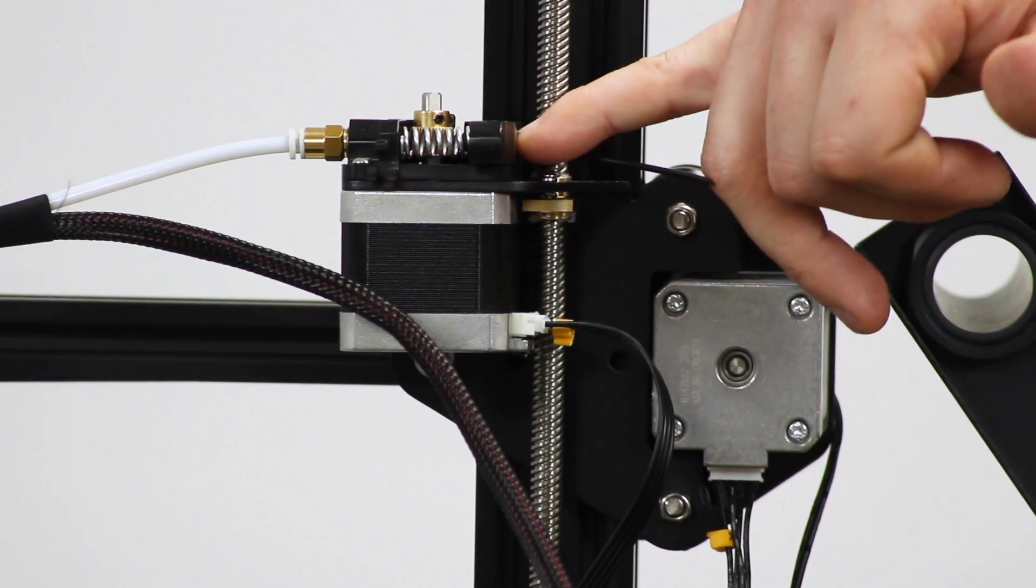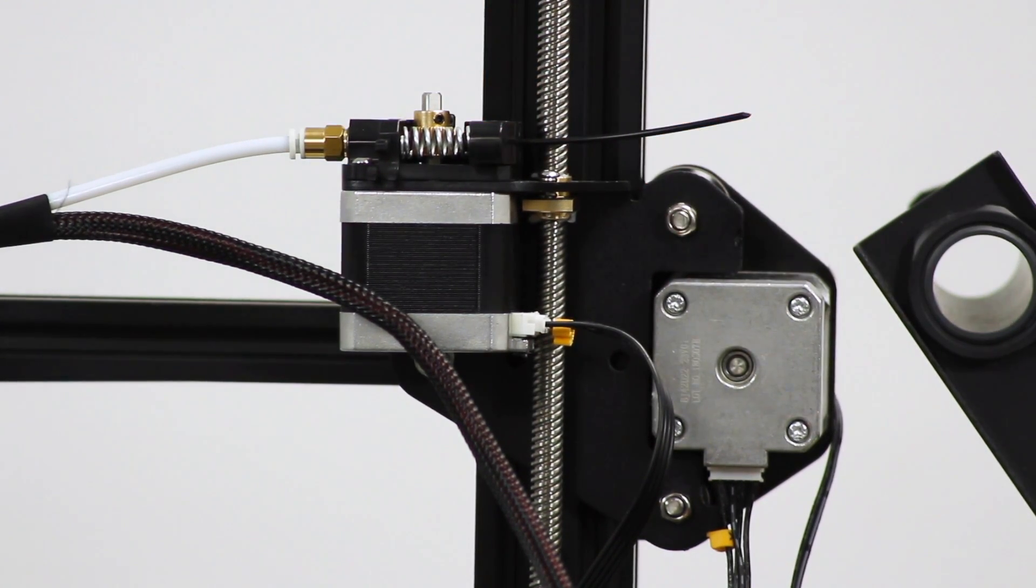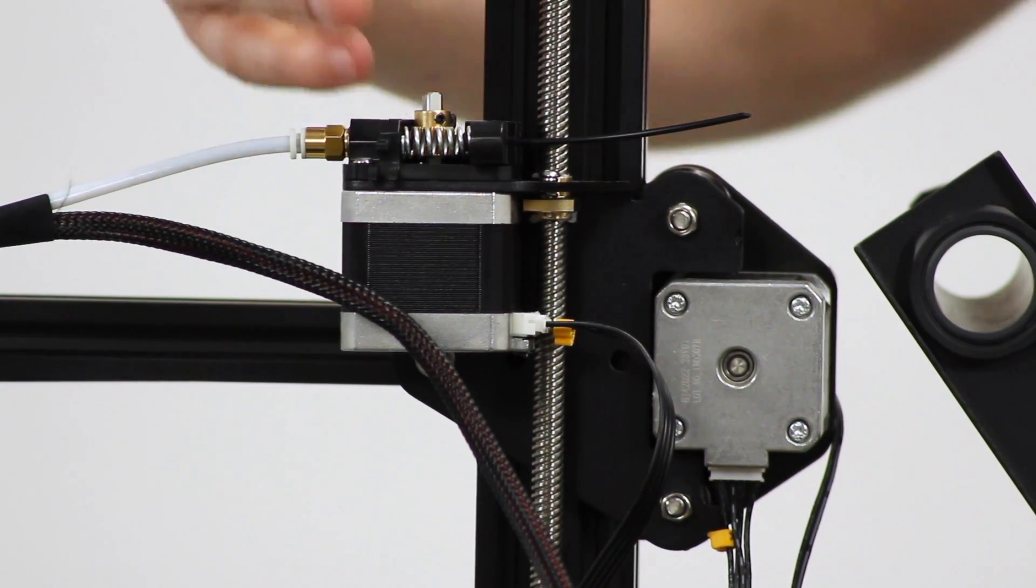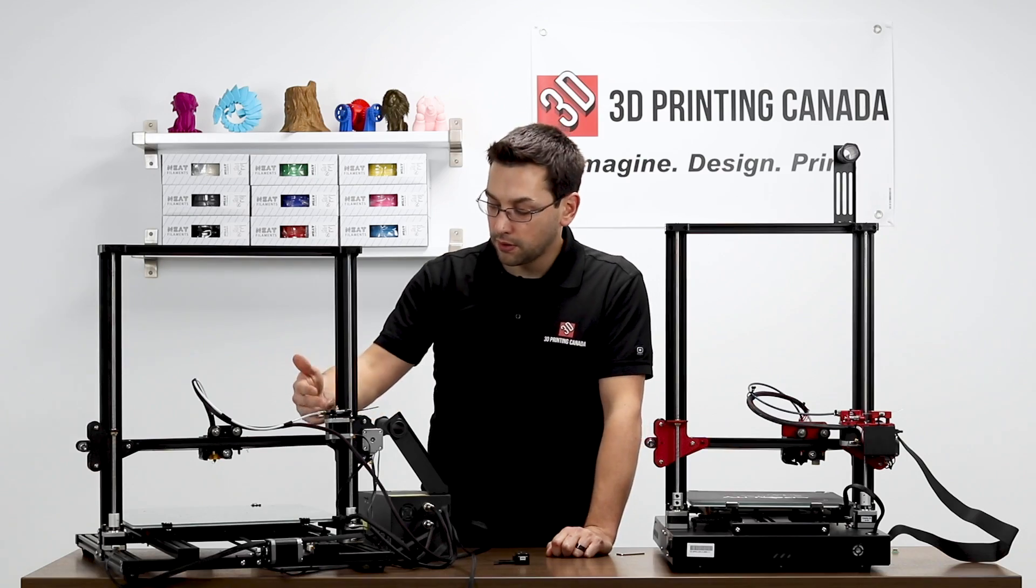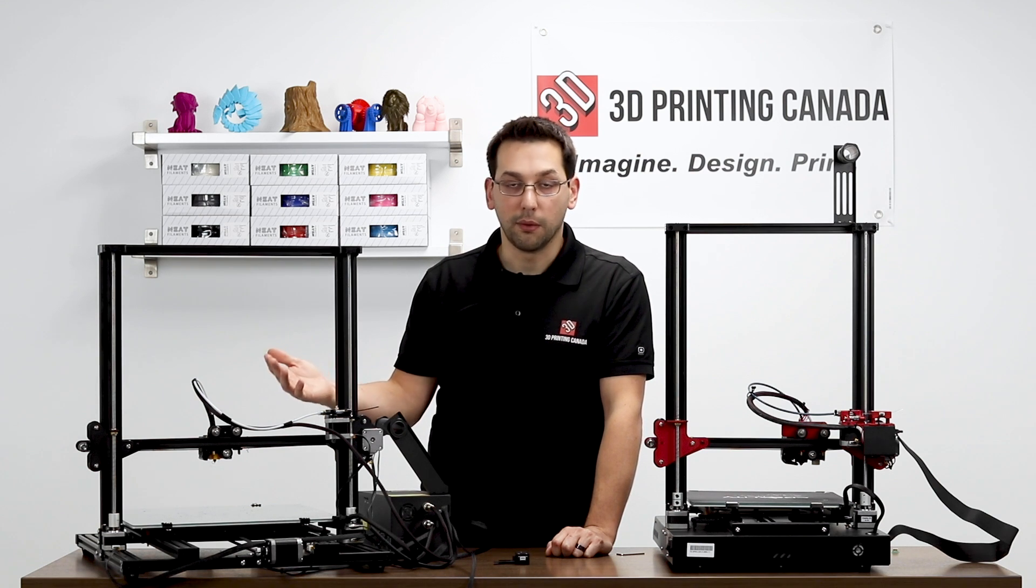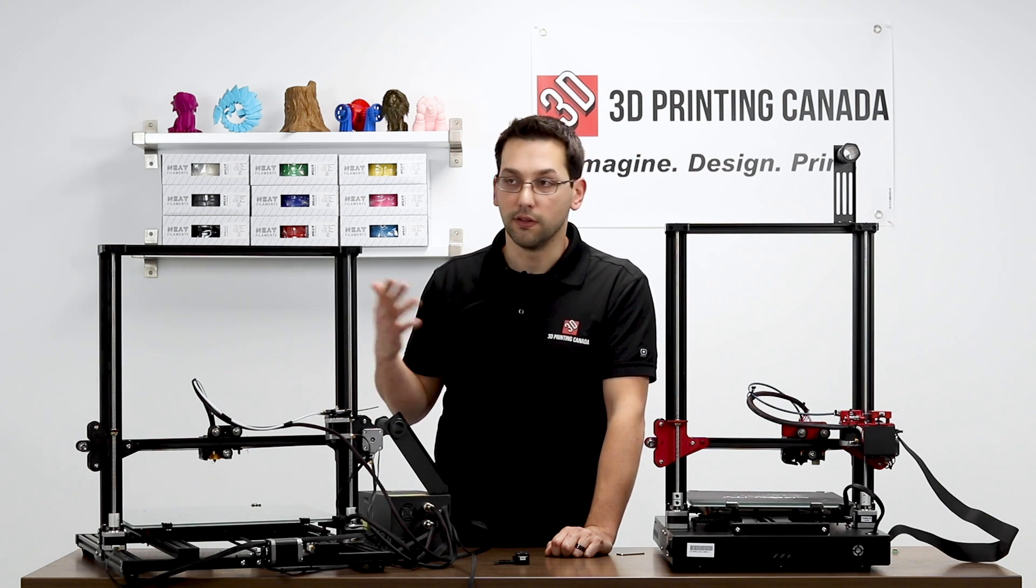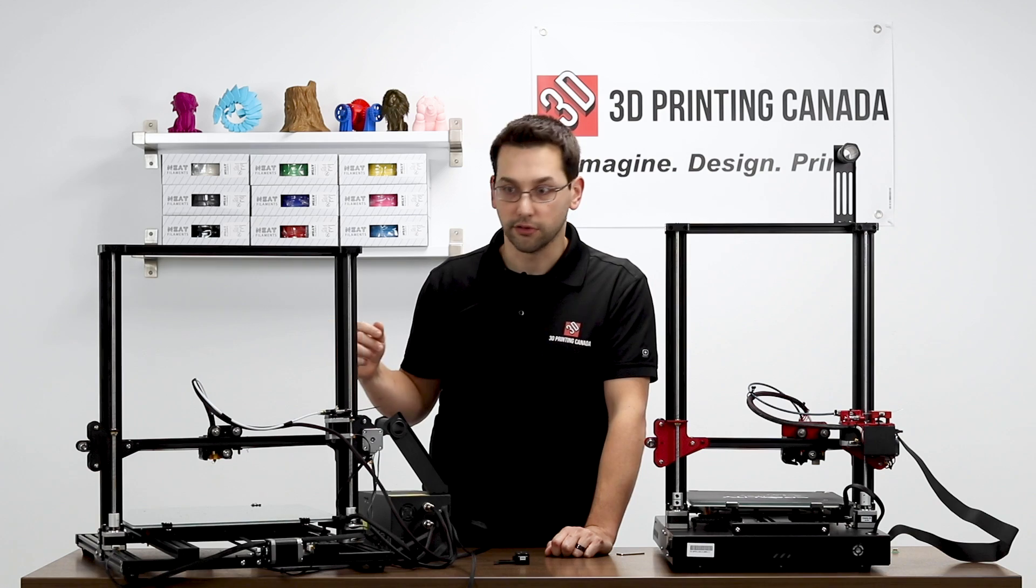So I like to put a PTFE tube in there. The aluminum is a lot more resistant to that kind of abrasion over time. But this is a kind of standard extruder assembly that we have seen across the Ender 3, the CR-10S, and that entire series.